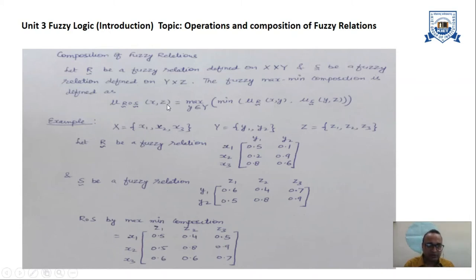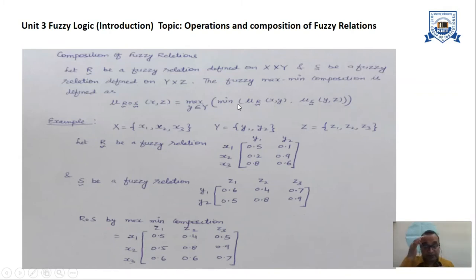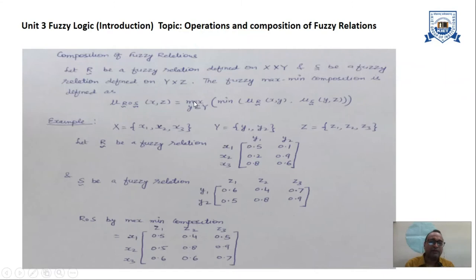Our objective is to make all possible ordered pairs of X and Z and find their membership values. That value can be represented as mu_R_O_S(x, z), and it can be achieved by the max-min composition. Max-min composition means: first you apply the min function, then finally you apply the max function.